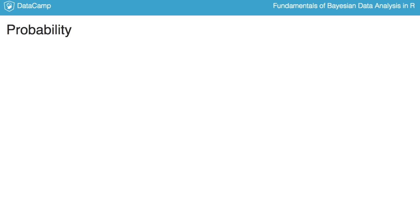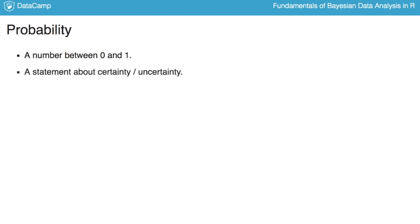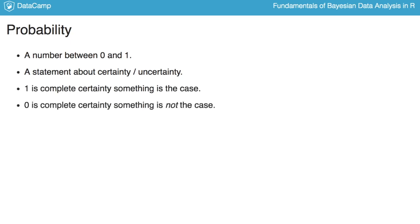The term probability can be defined in different ways. All definitions agree on the basic rules of probability and that it's a number between zero and one, but they don't agree on what probabilities stand for. The definition we are going to use here is that a probability is a statement about the certainty or uncertainty of different outcomes — a probability of one means complete certainty that something is the case, and zero means complete certainty that it is not. This is very similar to common sense use: you might say you're 99% sure it's going to rain tomorrow, or that it's a 50-50 chance, meaning you're very uncertain.